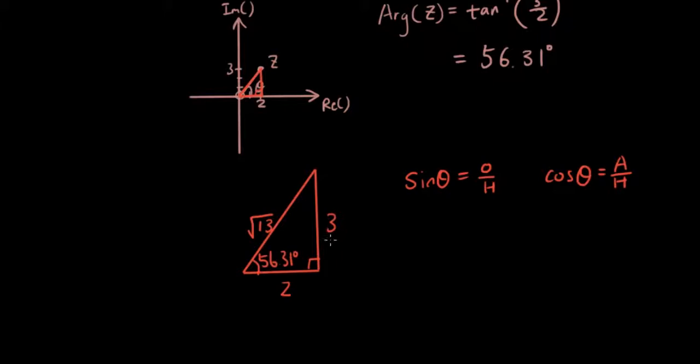So the opposite side is 3, the adjacent side is 2, and the hypotenuse is square root of 13, because this is my theta. So let's substitute those numbers in. I have sine 56.31 equals 3 over square root of 13.